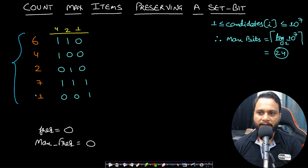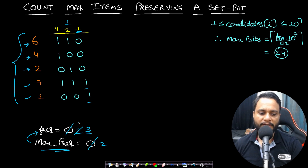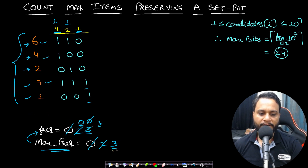Let's do a dry run. For the first bit position, we count how many items have it set: 7 and 1 do, so frequency is 2. For the second bit, 6, 2, and 7 have it set, so frequency is 3 — max frequency updates to max(2, 3) = 3. For the third bit, 6, 4, and 7 have it set — frequency is 3 again, so max frequency stays 3. The answer is 3.